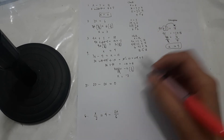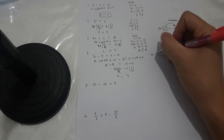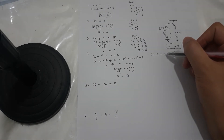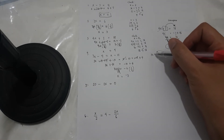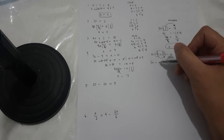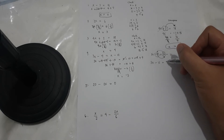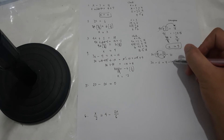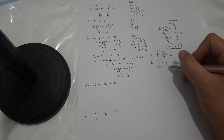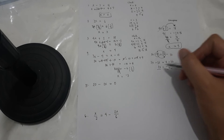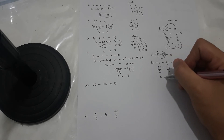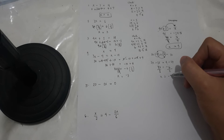Using the shortcut method on 3x minus 4 is equal to x minus 10: move x to the left side — it becomes negative x — and move negative 4 to the right side — it becomes positive 4. So 3x minus x is 2x, equal to 4 minus 10, that's negative 6. Divide both sides by 2 — x is equal to negative 6 divided by 2, that's negative 3. Same answer.